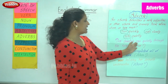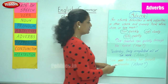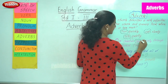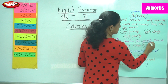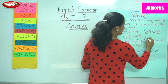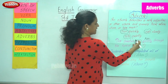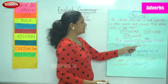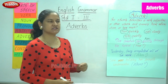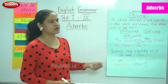'The cheetah ran quickly through the forest.' Here 'quickly' is the adverb — it describes the verb 'ran' and answers the question how. How did the cheetah run? The cheetah ran quickly through the forest.